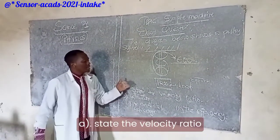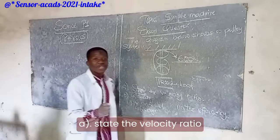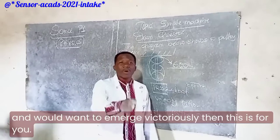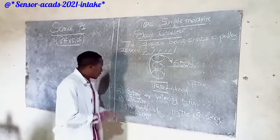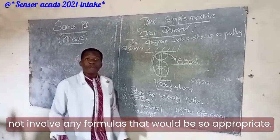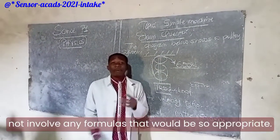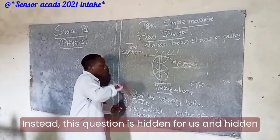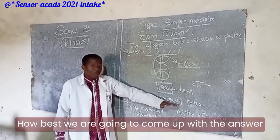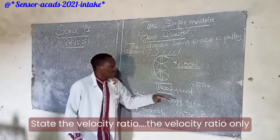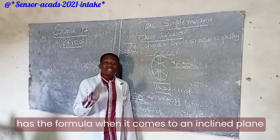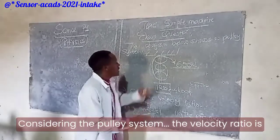Here is the question. Part A: state the velocity ratio. When the question says 'state' or 'determine', we will not involve any formulas — that would not be appropriate. Instead, this question has a hidden part where we want to see how best we come up with the answer. The velocity ratio only has a formula when it comes to an inclined plane.